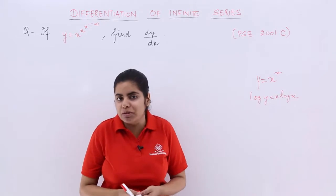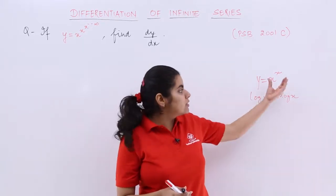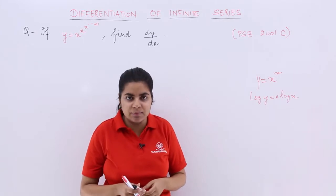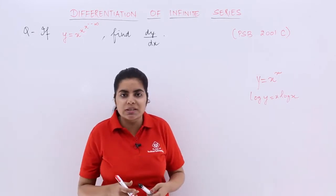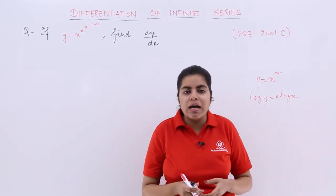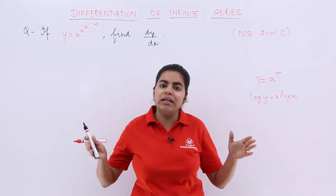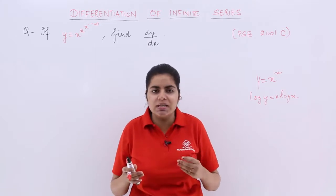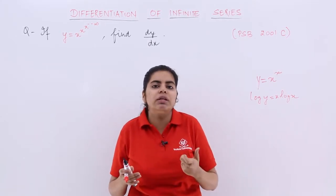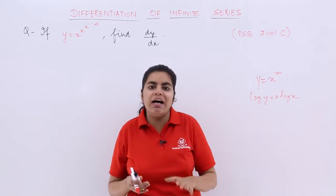But this question is a bit different. It does not say x raised to the power x only, rather infinite times x raised to the power x. Then how to do it? We would be using the knowledge we studied in the previous video that if from an infinite series, a huge series, a term is taken out, a term is removed, the whole series remains still unaffected.